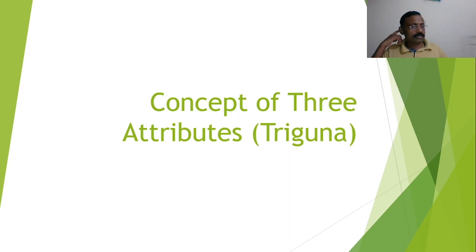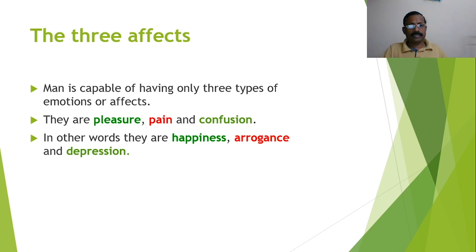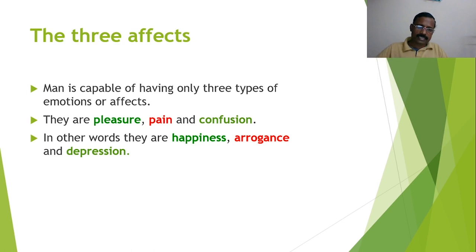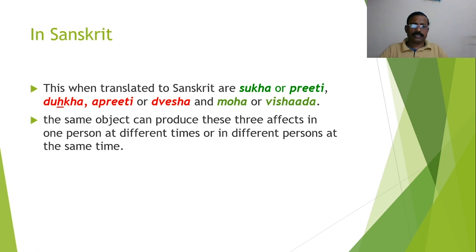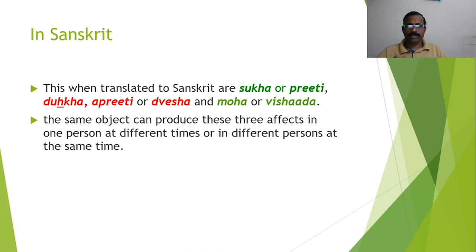Here comes the concept of three attributes — three gunas. Pleasure, pain, and confusion can also be expressed as happiness, arrogance, and depression respectively — these are identical. Pleasure equals happiness, pain equals arrogance, and confusion equals depression. Man is capable of only these three types of effects, though there can be any number of combinations. In Sanskrit: sukham or prithi (pleasure/happiness principle), dukham or aprithi or dvesha (aversion principle), and moha or vishada (inhibition/confusion principle). The same object can produce these three effects in one person at different times or in different persons at the same time.